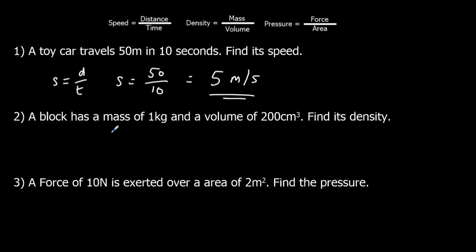A block has a mass of 1 kilogram and a volume of 200 centimeters cubed, find its density. Density is mass over volume. We've got a mass of 1, a volume of 200.